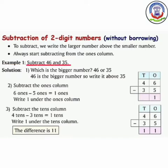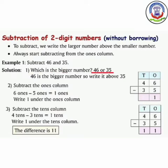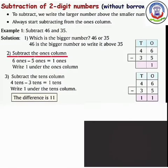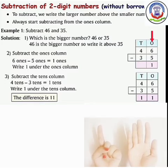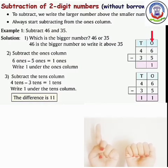Example 1: Subtract 46 and 35. Which is the bigger number? कौन सा bigger number है — 46 और 35? 46 is the bigger number, so write it above 35. 46 बड़ा नंबर है, तो हम 46 पहले लिखेंगे और फिर 35. Subtract the ones column. Numbers are 6 and 5. Open 6 fingers and close 5 fingers. How many fingers are left? 1. So we will write here 1.